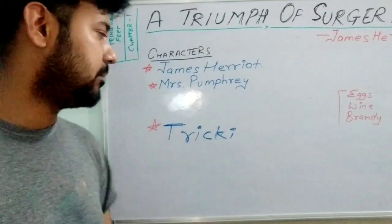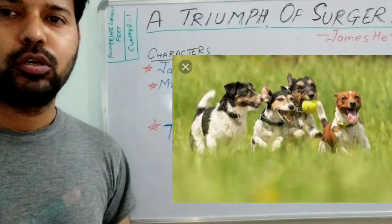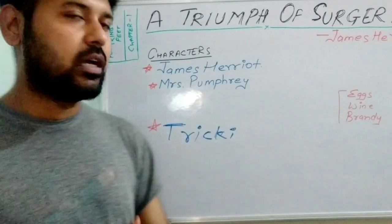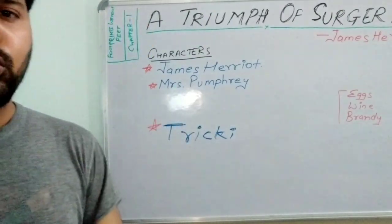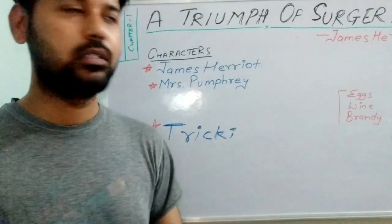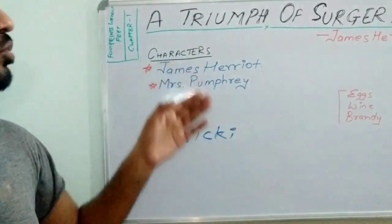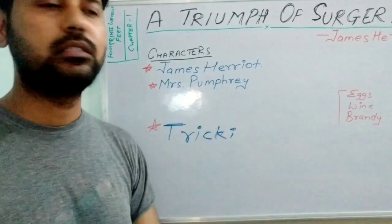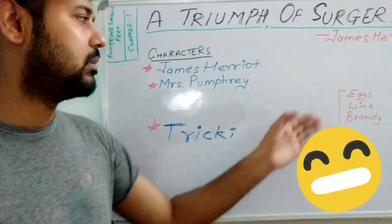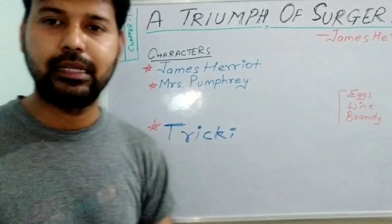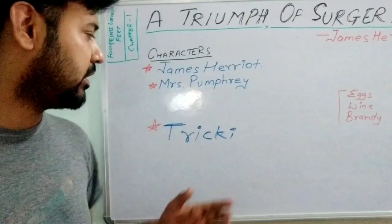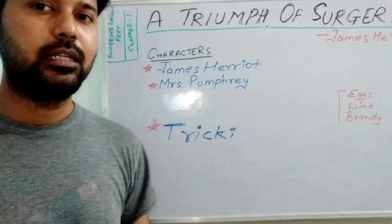With the strict diet that James Herriot had maintained, improvement was gradually observed in Tricky's health. Slowly, Tricky also developed a good friendship circle in the kennel with the other dogs. As days passed, Mrs. Pumphrey used to call James Herriot to know Tricky's condition and at times she visited, bringing eggs, wines, and brandies for the dog — but the most hilarious part of the chapter is that all those things were enjoyed by James Herriot and his companions. So it was a leisureful time for them.